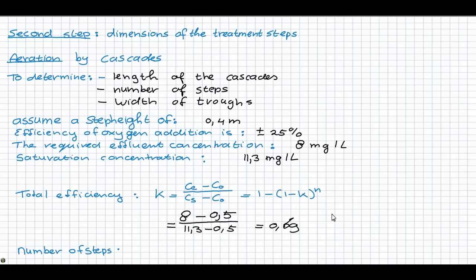With this we can calculate the number of steps. That's 1 minus the efficiency raised to the power n, where n is the number of steps. We can calculate that the number of steps is 4. Each step has a height of 0.4 meters, so the total height of the cascade is 1.6 meters.